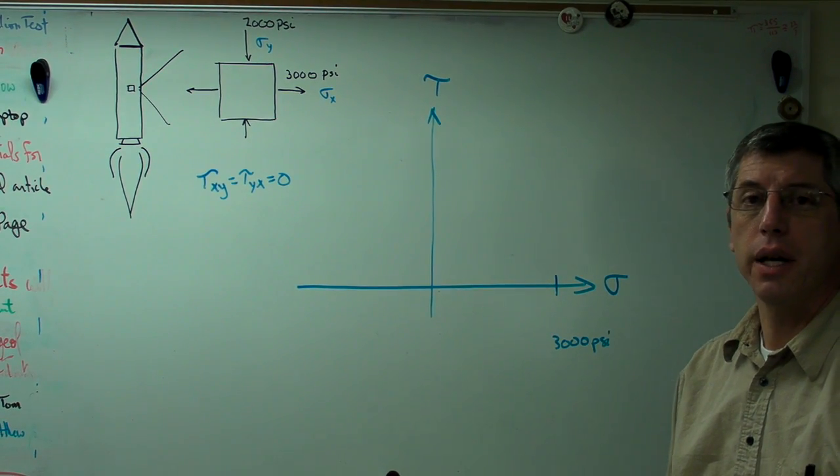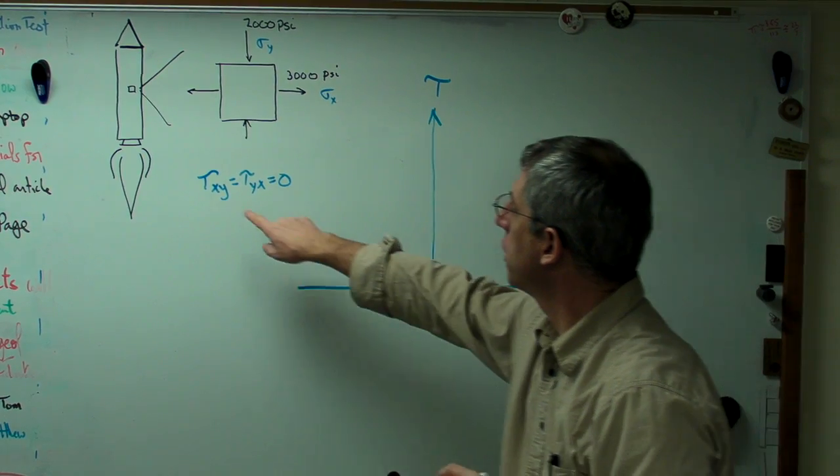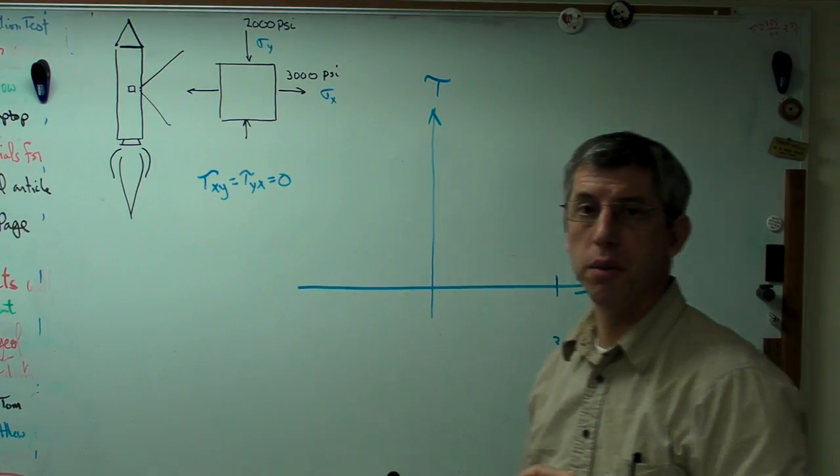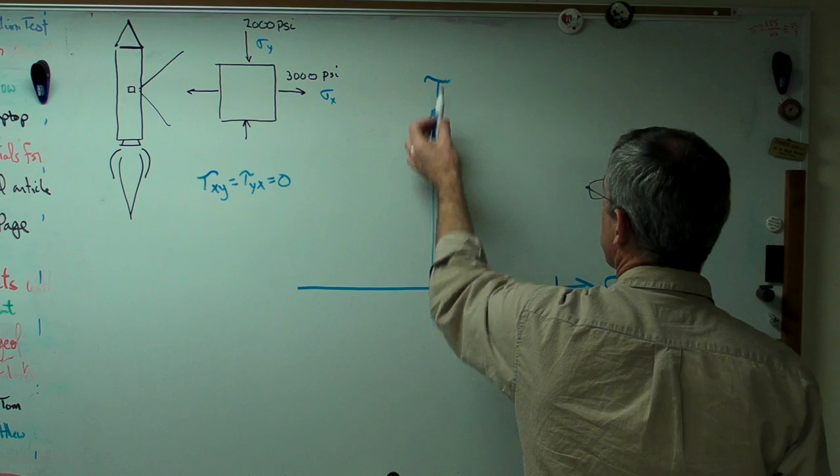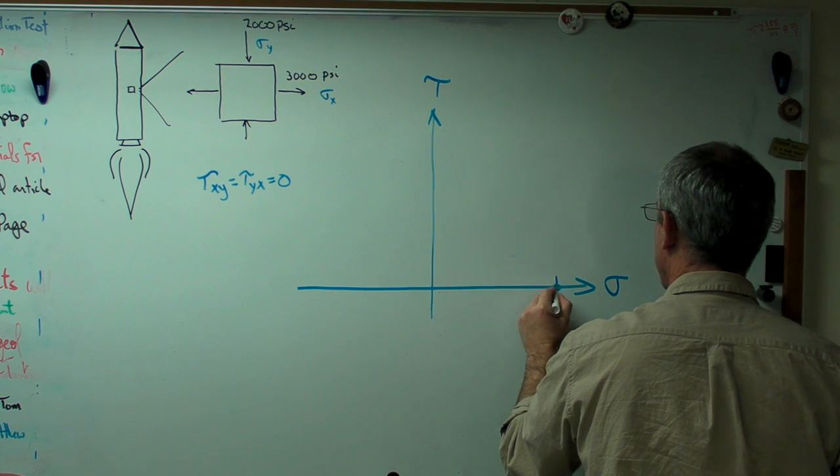Now, the next thing to do is look at what the vertical component is. Vertical component is zero. There's no shear stress at that point. So I'm going to draw a point right there.